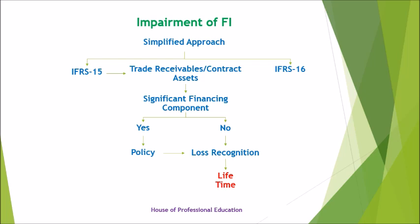Then we will recognize loss in lifetime. Under IFRS 16, for lease receivables that result from transactions within the scope of IFRS 15, if the entity chooses as its accounting policy to measure the loss allowance at an amount equal to lifetime expected credit losses, it will apply that policy. In the absence of such an accounting policy, the simplified approach will not be applicable and these financial instruments will be treated as per IFRS 9. In case of loan commitments and financial guarantees, an entity considers the expected portion of a loan commitment that will be drawn down within the next 12 months when estimating 12-month expected credit losses at Level 1, and the expected portion drawn down within the remaining life of the loan commitment at Level 2.